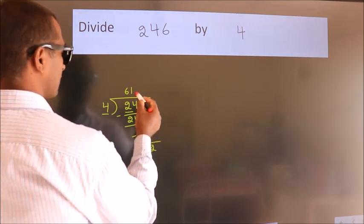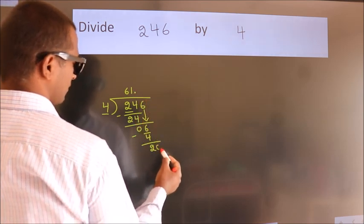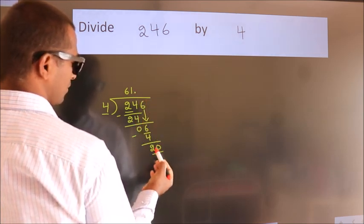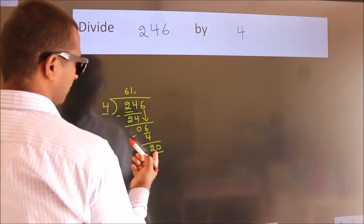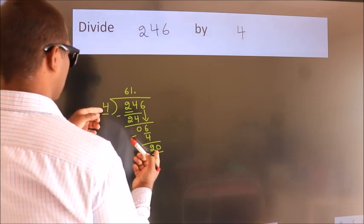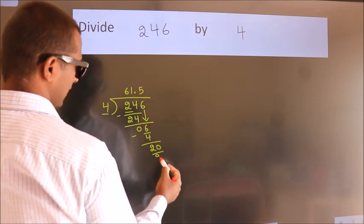So what we do is, we put dot, take 0. So 20. When do we get 20? In 4 table. 4 fives, 20.